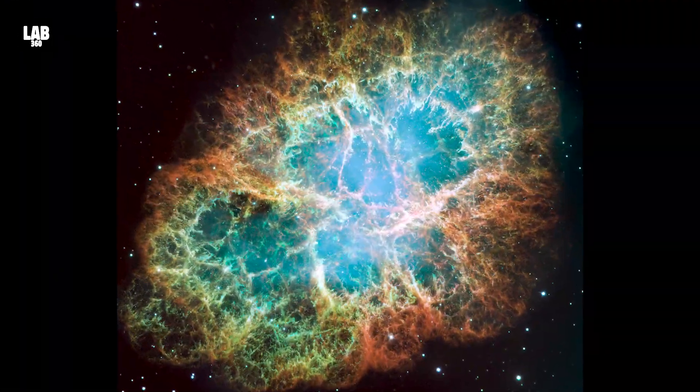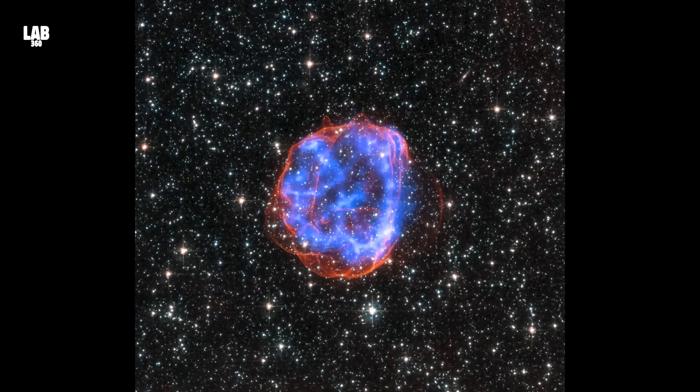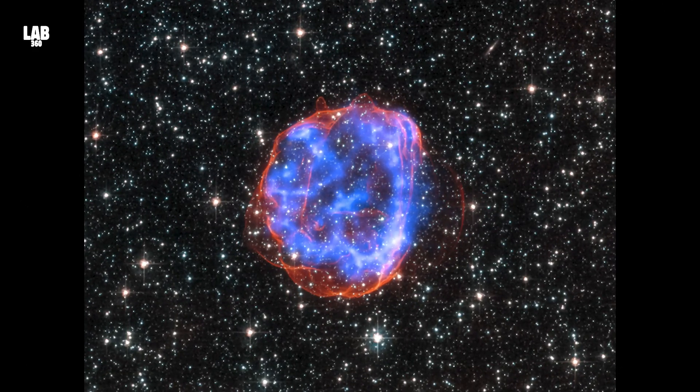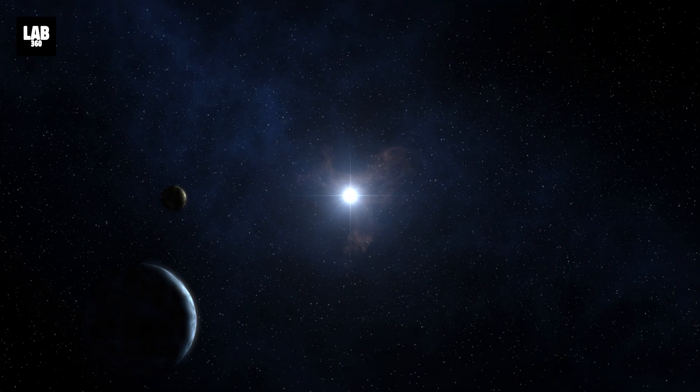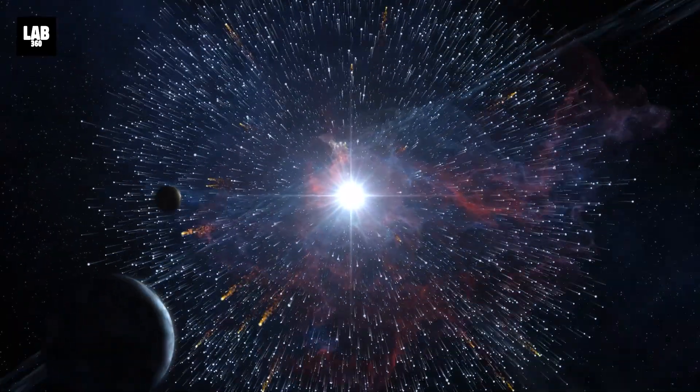Not all supernovas are the same. Some occur when massive stars collapse, while others happen when a white dwarf steals matter from a nearby star and detonates.